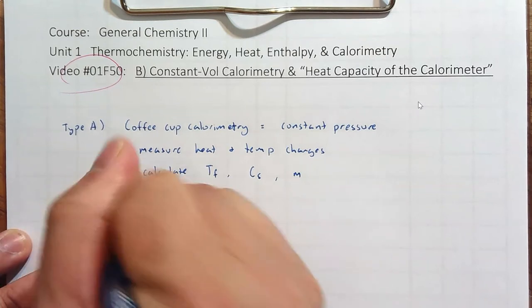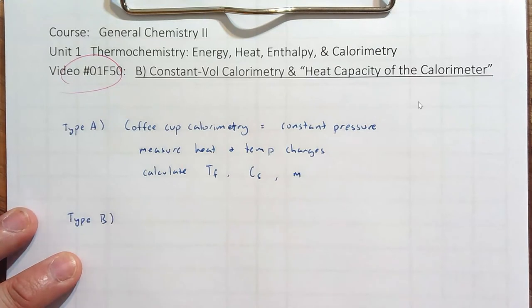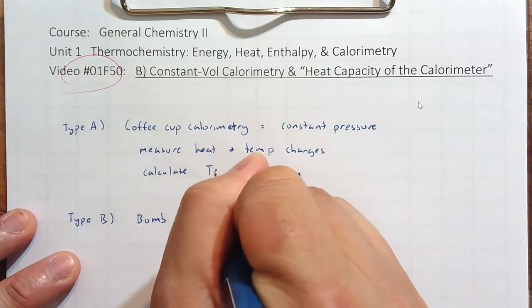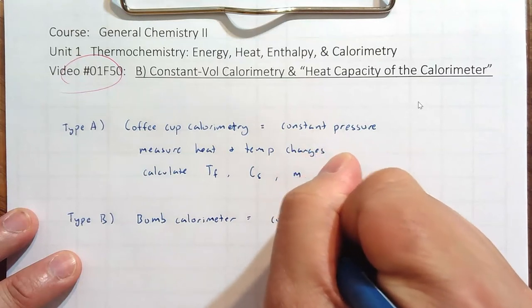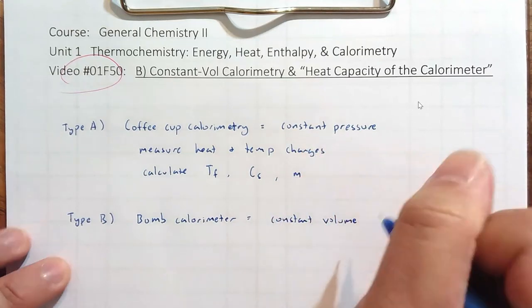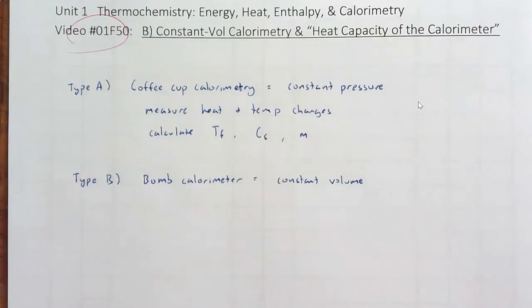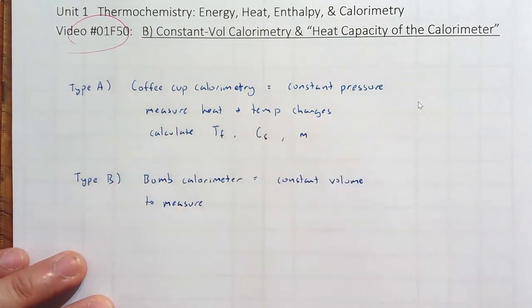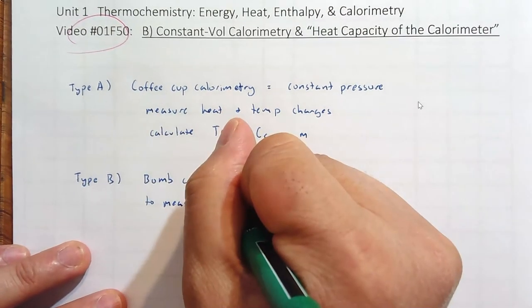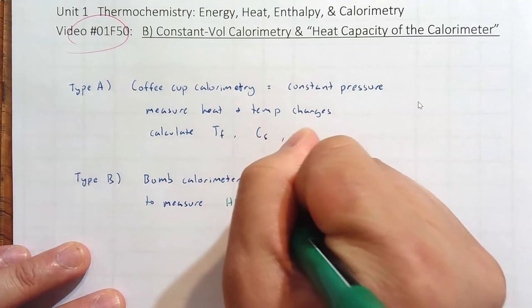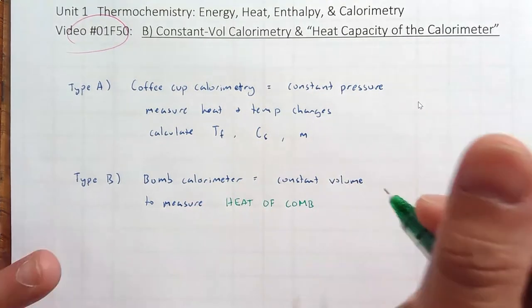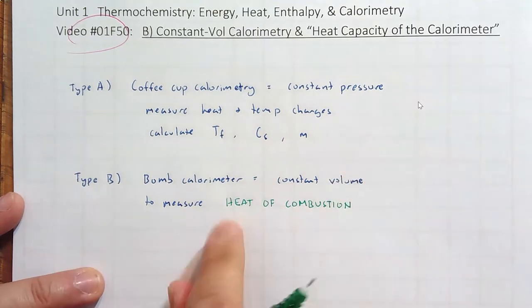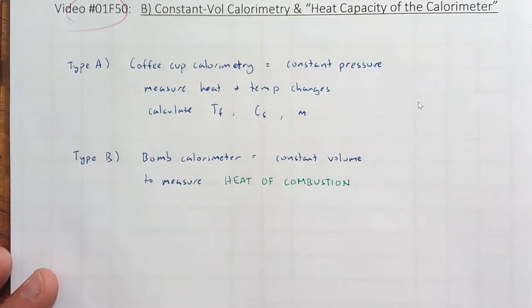In this video, let's take a look at a different type of calorimetry called constant volume. The setup is using what's called a bomb calorimeter. And we're going to consider this constant volume, because it is going to be sealed. And the purpose of this is to measure the heat of combustion. That's a new term for most of us. We're going to look a little more carefully at this combustion reaction. And we're going to measure the heat, how much heat or energy is evolved when something is burning.